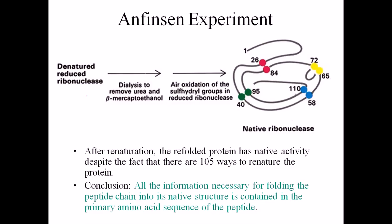After obtaining the denatured, reduced ribonuclease, he performed dialysis to remove all the urea and beta-mercaptoethanol. After removing these agents through dialysis, he air-oxidized the sulfide linkages. The hypothesis was that all the sulfur groups would start to reform disulfide linkages with the help of air oxidation — and the hypothesis was proven right.